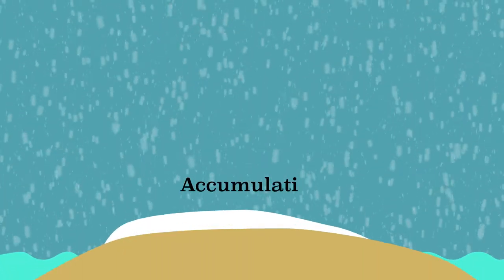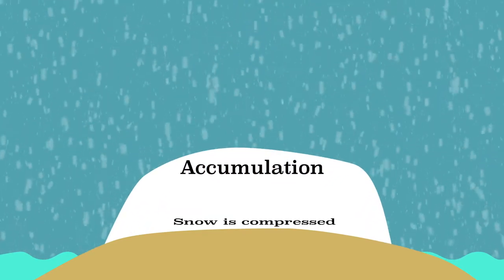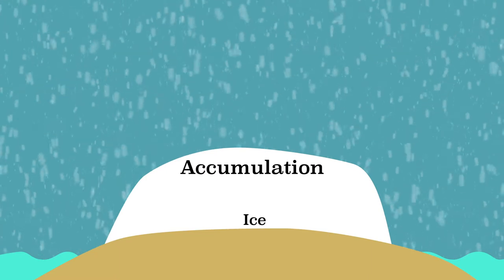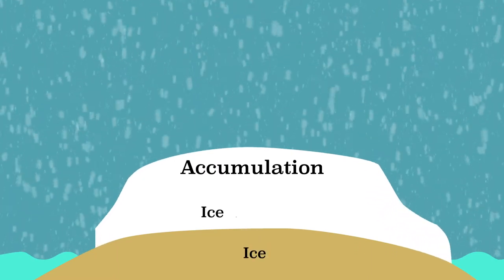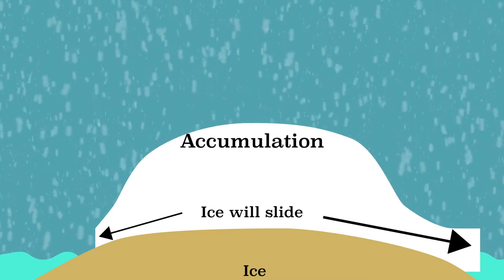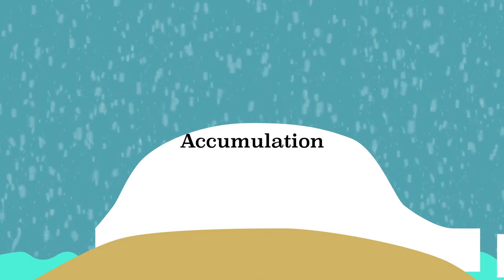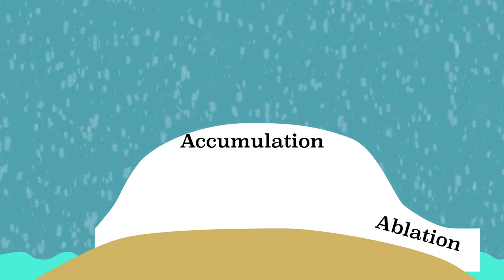Ice sheets are created by snow. This is called accumulation. The snow can be compressed to ice by the pressure. This can create a thick layer and gravity causes the ice to slide. At the edge of the ice sheet, the ice melts or breaks down like an iceberg and floats into the sea. This is the end of the ice sheet and this is called ablation.